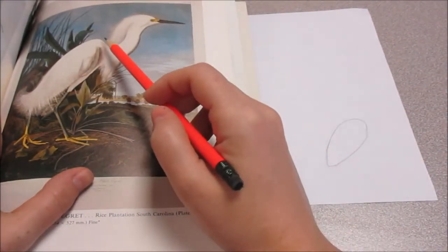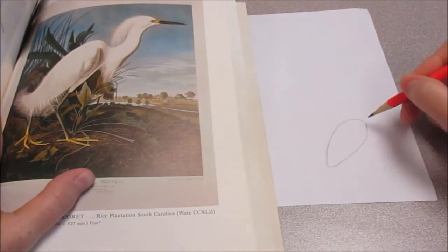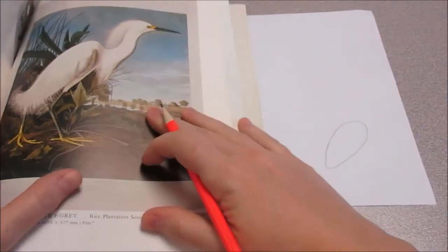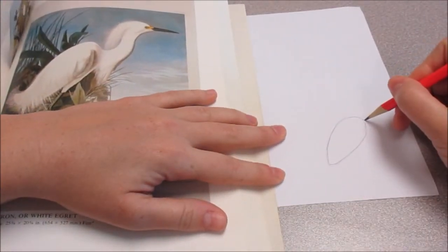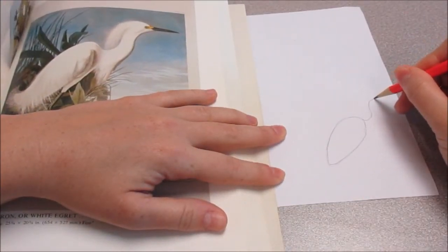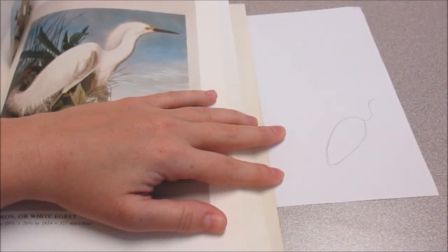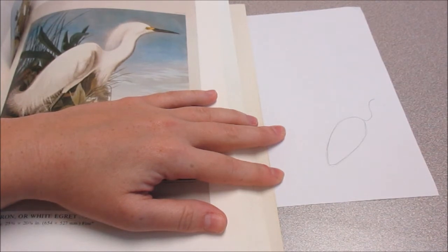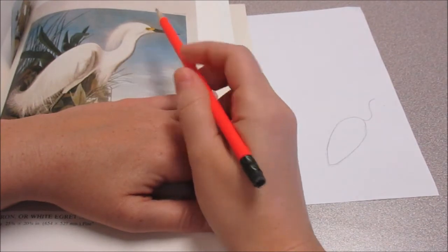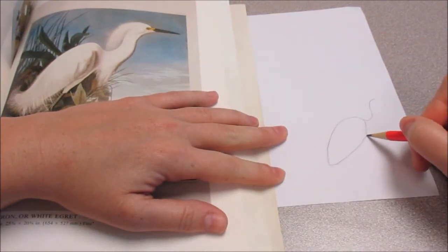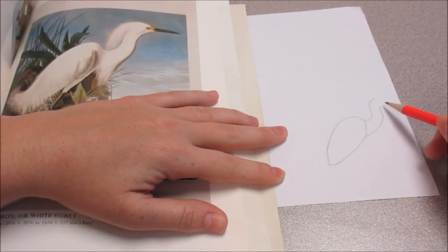So then for its neck, we need to come down and curve back up in this sort of S curve. It's hard to hold the paper like that. Need to leave room for its beak. Same thing. Go over here. Curve up.